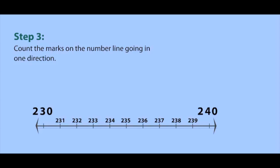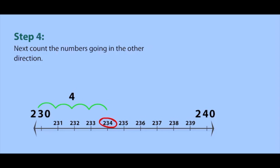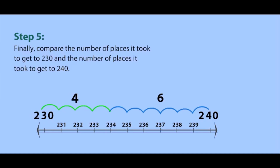Now count the marks on the number line. Choose one direction to count first. If we start at 234 and count to 230, we see that it's four places away. Then count in the next direction. If we count from 234 to 240, we see that it's six places away.